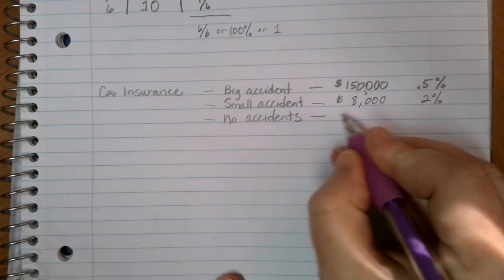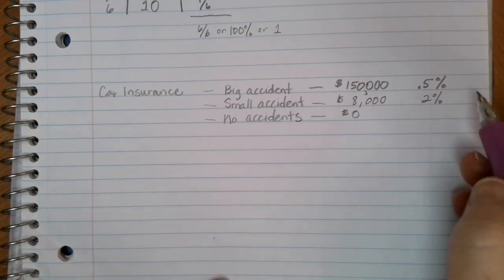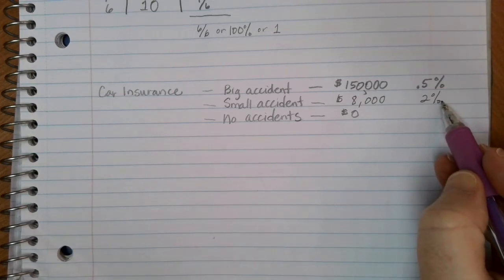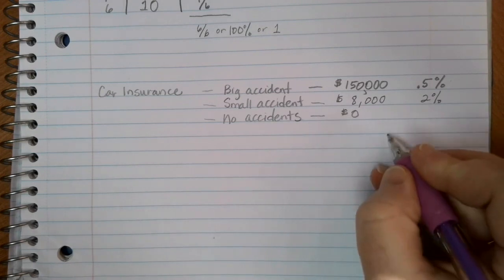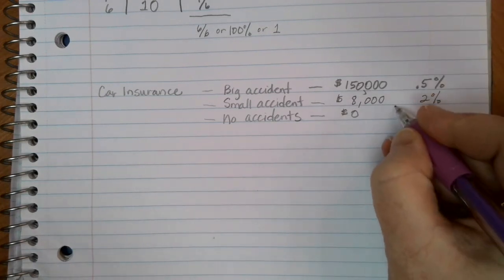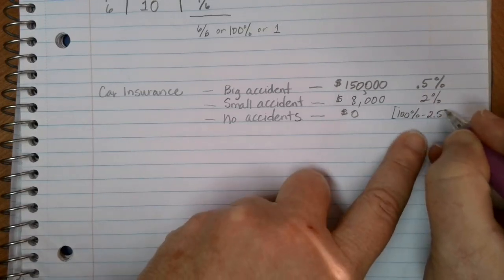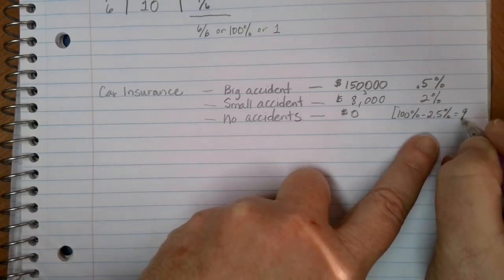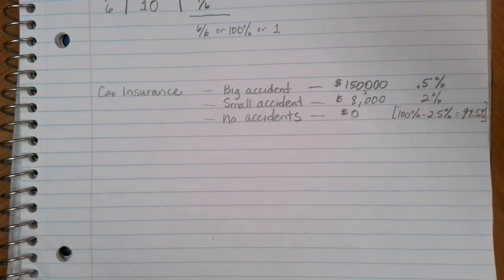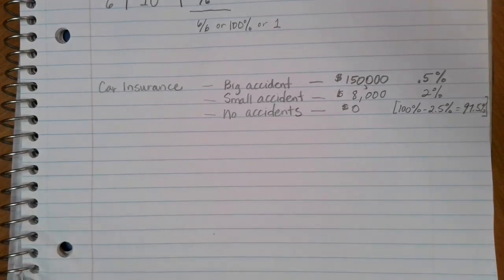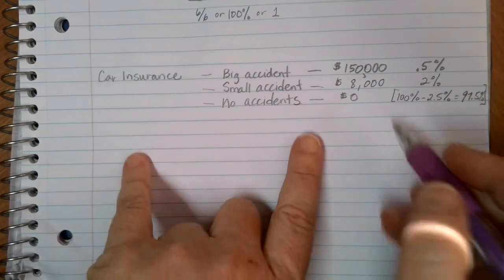If there's no accidents, the car insurance company would pay out zero dollars. What's the chance of that happening? Well, we've got 2% of people involved in small accidents, 0.5% in big accidents. So we have 100% minus that 2.5% that's taken care of already. So there's a 97.5% chance that no money is going to need to be outlaid from the company for car insurance because the people would not have gotten into an accident. So as I come up with my probability table,